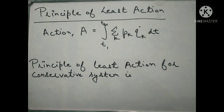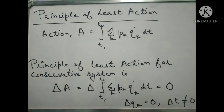Next topic is the principle of least action. Action A = ∫(t1 to t2) Σk pk·q̇k dt. In the principle of least action, we apply delta variation. Action is least — minimum — and when we vary it, it becomes constant, so the variation of the integral equals zero: δA = 0. In Hamilton's variational principle, del variation is used; in the principle of least action, delta variation is used.